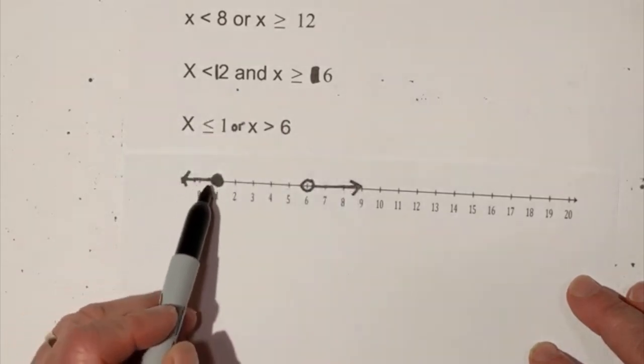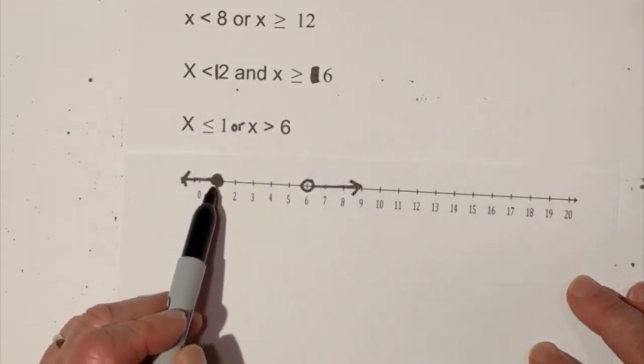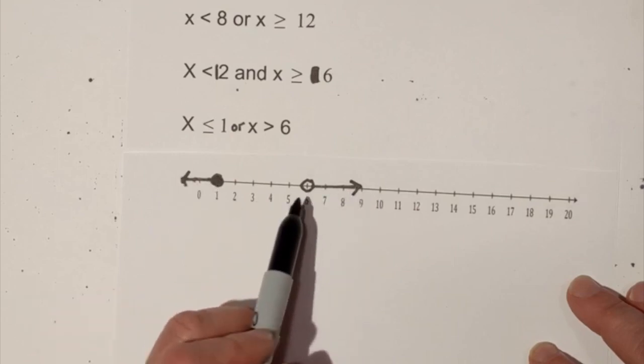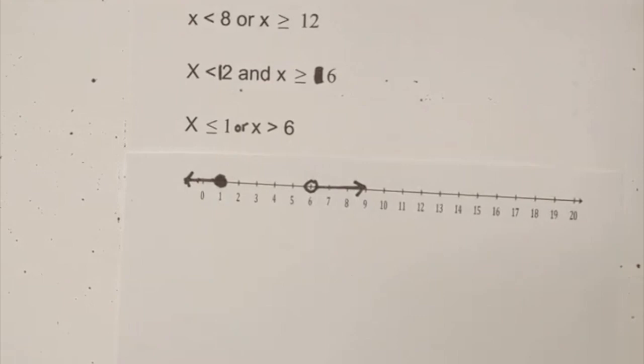So it's either less than or equal to 1 or greater than 6 not including 6 on the number line.